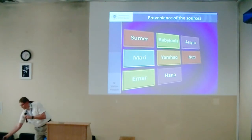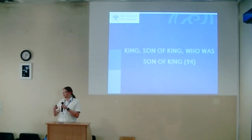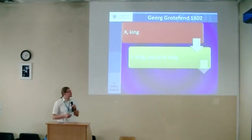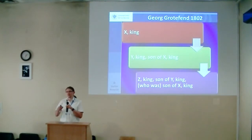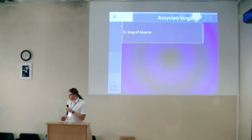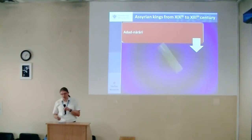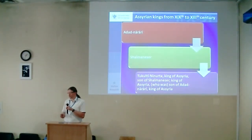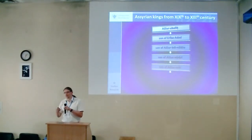First of all, we have a title 'king who is son of king who was son of another king.' This is a title that Gargothan started working on in Persepolis inscriptions. We see king X, king Y son of X, and king Z son of Y. Such a model appears in Assyria: for example, Adad-Narari as grandfather, Shalmanezer as father, and Tukulti-Nimurta, king of Assyria, son of Shalmanezer, son of Adad-Narari.